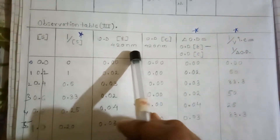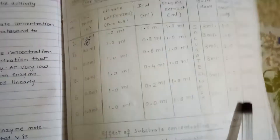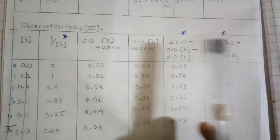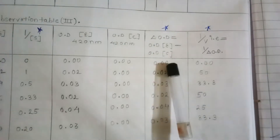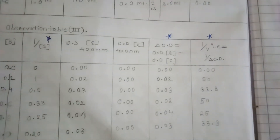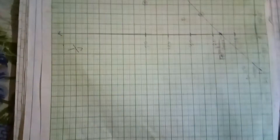OD values from the experimental series are taken from the observation table. OD values from the control series, where no enzyme was added, are also recorded. The control OD values are subtracted from the experimental OD values, and the reciprocal of this corrected value (1/V, i.e., 1/OD) is calculated for the y-axis of the Lineweaver-Burk plot.